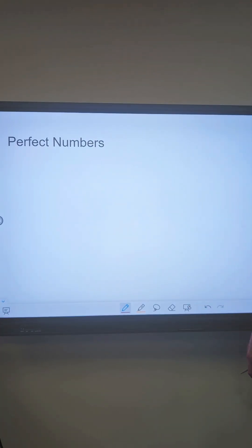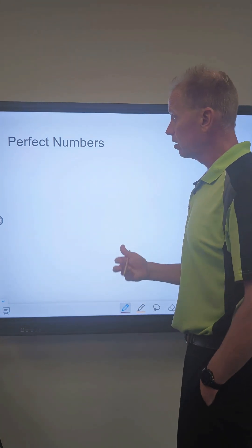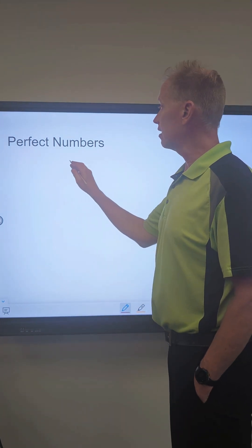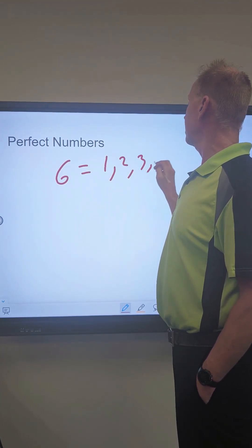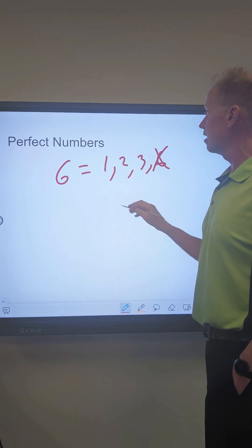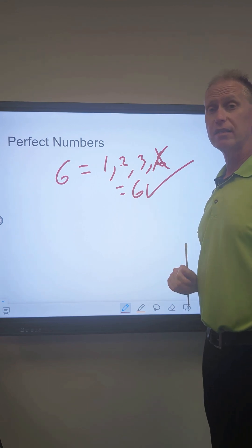Now let's look at perfect numbers. Perfect numbers is where the factors equal the original number. The most popular perfect number is six. The factors are one, two, three, and six. Don't count the six. One plus two is three, three plus three is six, and that's a perfect number. Can you come up with another perfect number?